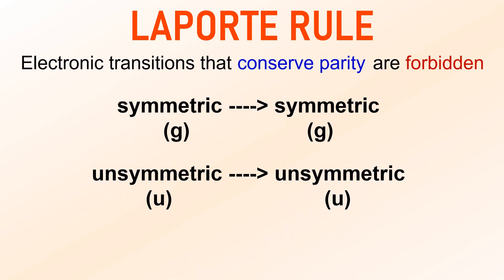For example, electronic transitions between two symmetric states or between two asymmetric states are forbidden according to the Laporte rule. In other words, transitions must involve a change in symmetry or parity for them to be allowed.